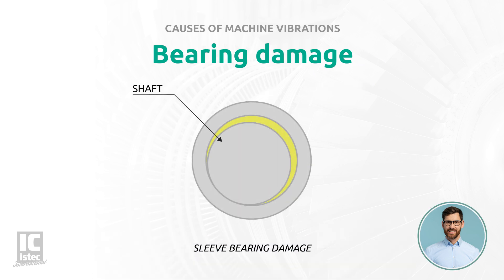Sleeve bearings do not use rolling elements, but a fluid film to reduce friction. Vibrations can be caused by inaccuracies in this fluid film. Sleeve bearings are also sensitive to external influences on the position of the shaft, as its position in the bearing is not fixed.